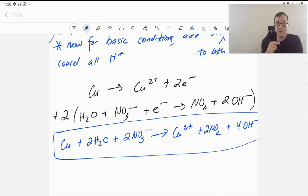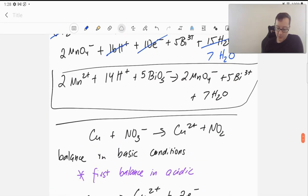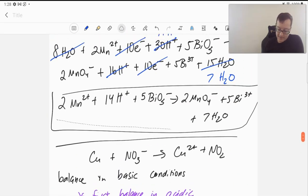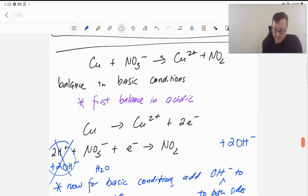If we wanted to take that previous complex equation we didn't balance in basic conditions, let's pretend we did that. We can take the very last one and work on that too. Usually we do this at the half-reaction step before we add them together, but if you want, you can solve the complete balancing and then add the hydroxides.